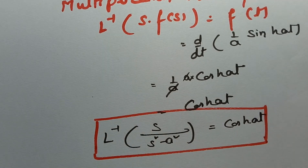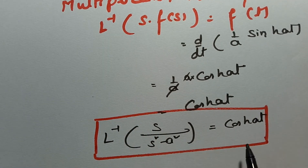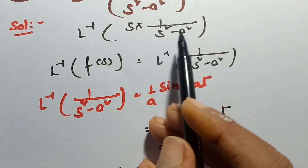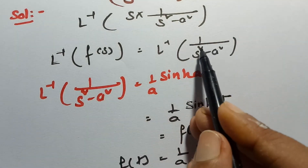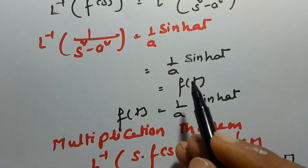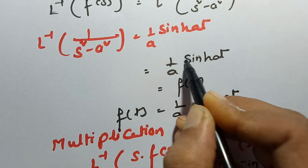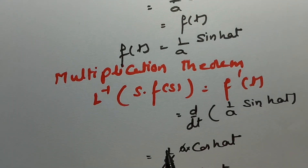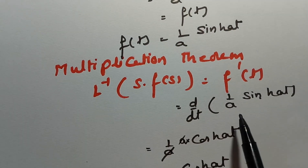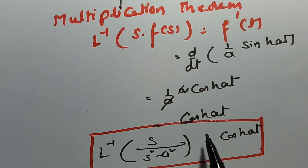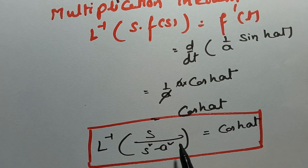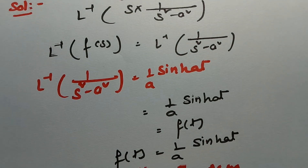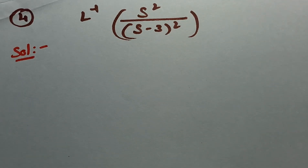This is the most famous formula: the inverse Laplace transform of s/(s²−a²) = cosh(at). To summarize: I took F(s) = 1/(s²−a²), applied the elementary formula to get f(t) = (1/a)·sinh(at), then applied the multiplication theorem — differentiating once — to obtain cosh(at).